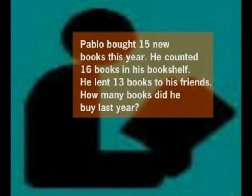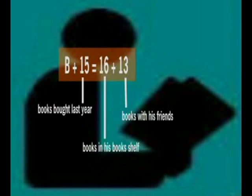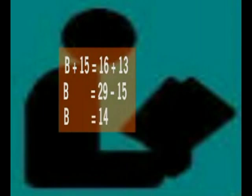Try this with us! Pablo bought 15 new books this year. He counted 16 books in his bookshelf. He lent 13 books to his friends. How many books did he buy last year? Let B equal the number of books Pablo bought last year. B plus 15 is equal to 16 plus 13. B is equal to 29 minus 15. B is equal to 14. Pablo bought 14 books last year.